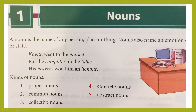Let's take these examples. The first example: Kavitha went to the market. Here we have the name of a person, Kavitha, and the name given to a place, market. So Kavitha and market are the nouns. Put the computer on the table — computer and table are both names of things, so they are nouns. His bravery won him honor — here bravery and honor are qualities or states, so these two are also nouns.